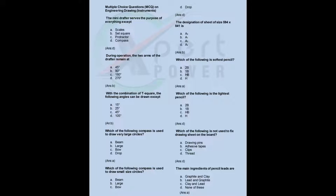Which of the following compass is used to draw very large circles? a) beam, b) large, c) bow, d) drop. Answer: A. Which of the following compass is used to draw small size circles? a) beam, b) large, c) bow, d) drop. Answer: D.